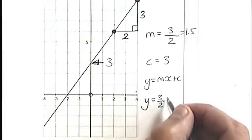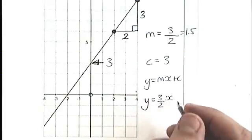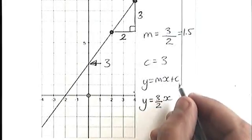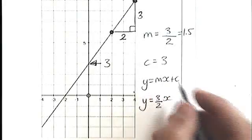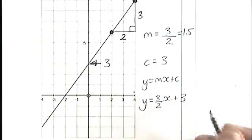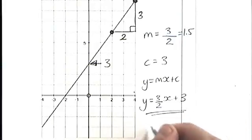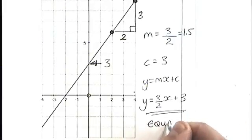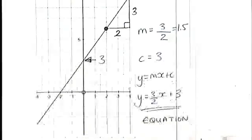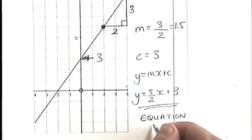The value of x I don't substitute. That can change. And the value of c I can substitute. It's a 3. So the equation of this line is y equals 3 over 2x plus 3.